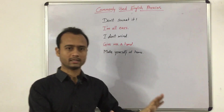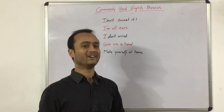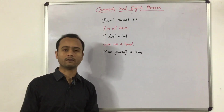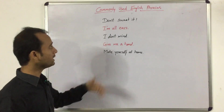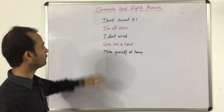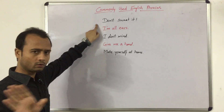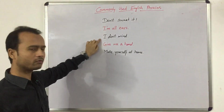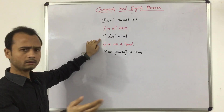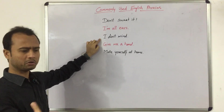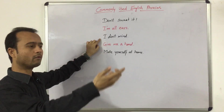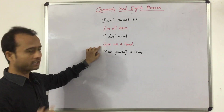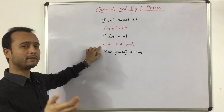So these are some common English phrases we use in our daily everyday life. You can memorize them to upgrade your English. Number one: don't sweat it — means don't worry. Number two: all ears — I'm listening carefully. Number three: I don't mind — whether tea or coffee, or bus or taxi, I don't mind. Give me a hand means can you help me.